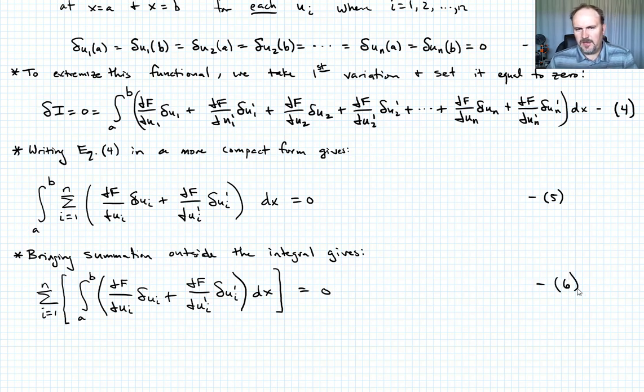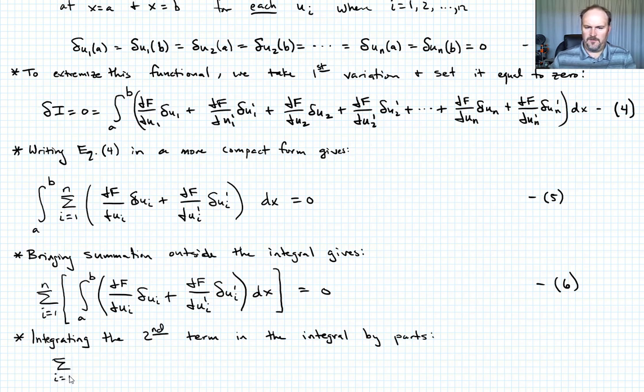Okay, hopefully this is seeming familiar to you now. What I want to do is I want to integrate this second term in the integral by parts. And when I do that, I have this summation term, sum from i equals one to n, and then my bracket.